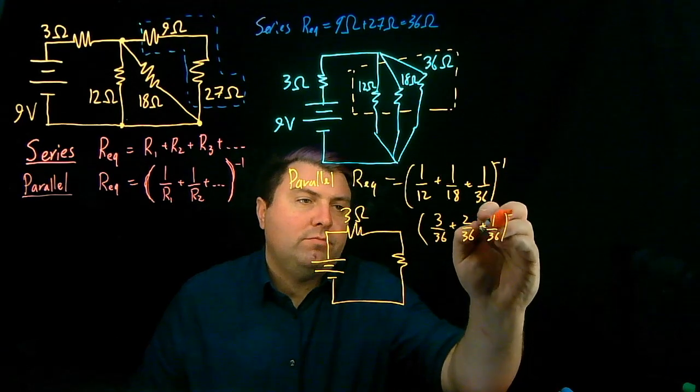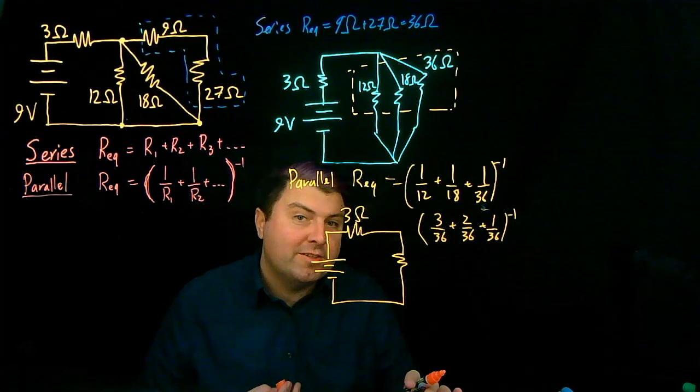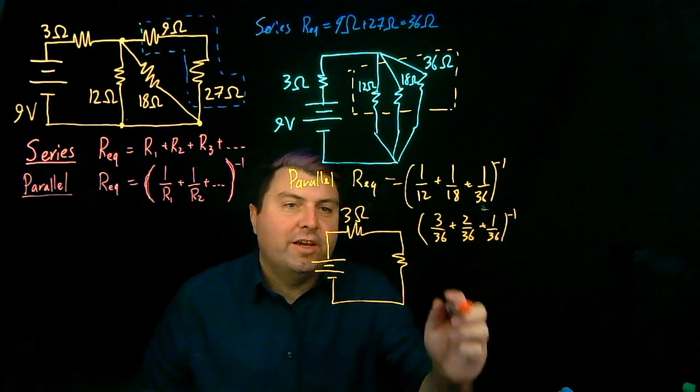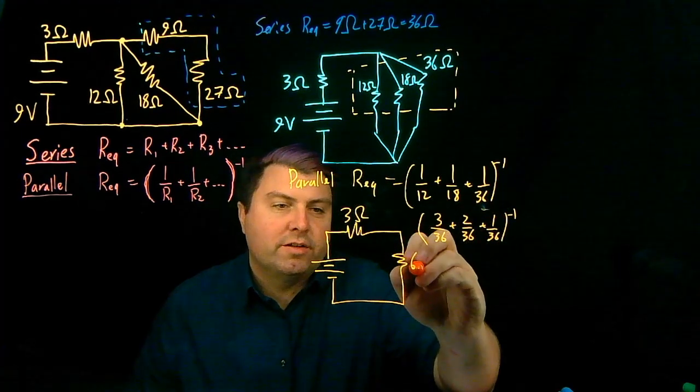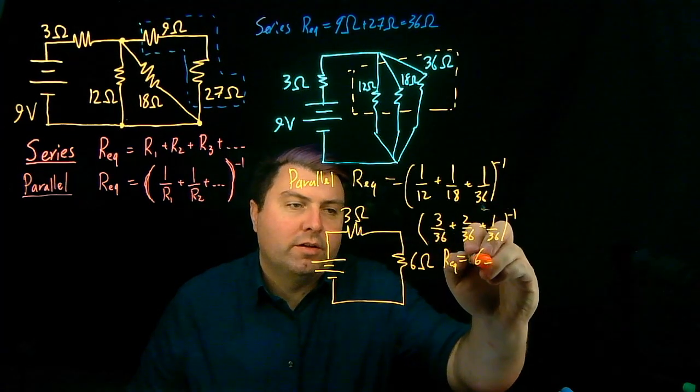To the negative 1, 3 plus 2 plus 1 is 6. 6 over 36 is 1 sixth to the negative 1 will give us that this is 6 ohms. So then our equivalent is 6 ohms.